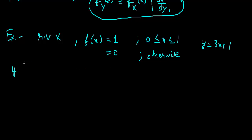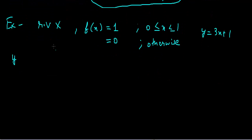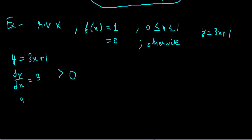For that, we will use the theorem 1 formula. We find dy/dx by differentiating y equals 3x plus 1, which gives dy/dx equals 3, and since 3 is greater than 0, we can say that y is a strictly monotonic increasing function.